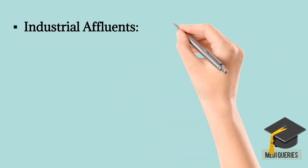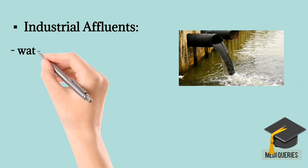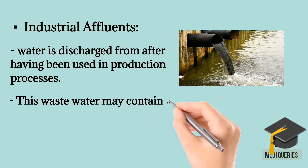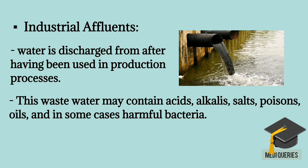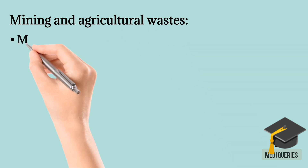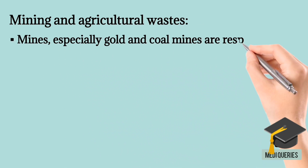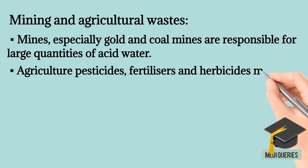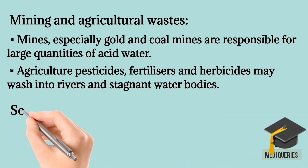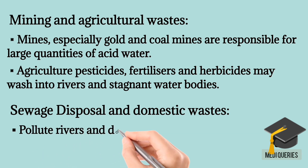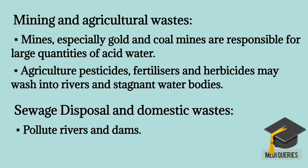Examples of Water Pollution. Industrial Effluent: water discharged after having been used in production processes may contain acids, alkalis, salts, poisons, oils, and in some cases harmful bacteria. Mining and Agricultural Waste: mines, especially gold and coal mines, are responsible for large quantities of acid water. Agricultural pesticides, fertilizers, and herbicides may wash into rivers and stagnant water bodies. Sewage Disposal and Domestic Waste: sewage as well as domestic and farm waste were often allowed to pollute rivers and dams.